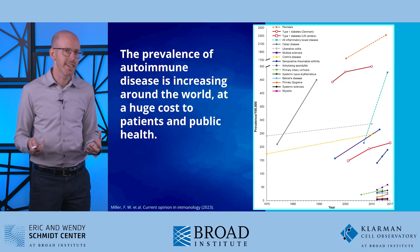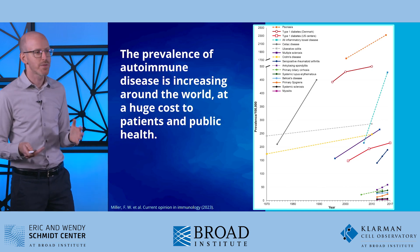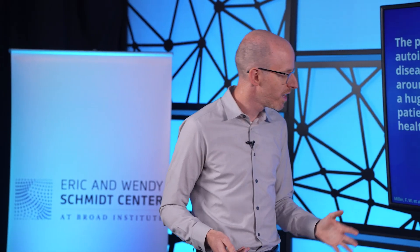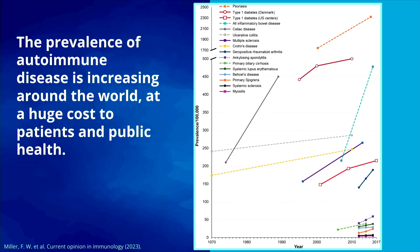Very concerningly, the prevalence of autoimmune disease is increasing around the world, and this comes at huge cost to patients and public health. Here we're looking at a graph of different autoimmune diseases and their prevalence over time, and you can see that all these diseases have been going up over the last few decades. In particular, inflammatory bowel disease, which is what you'll be working on in this competition, has really gone up over the last 20 or 30 years.